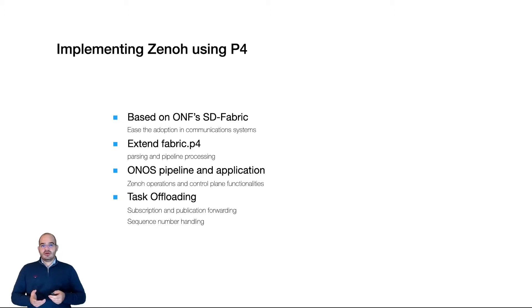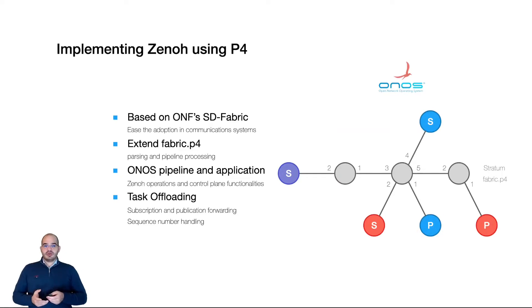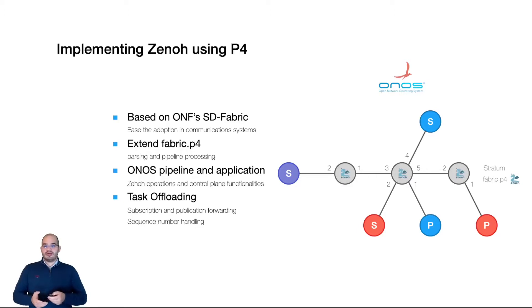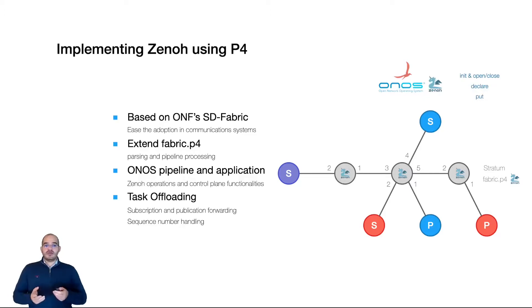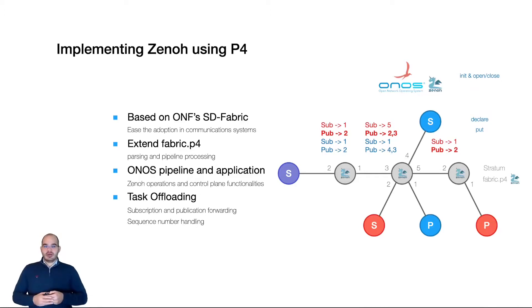Our implementation of Xeno using P4 is based on the ONF-SD Fabric, which means that we use ONOS, Stratum, and Fabric.p4. The goal is to foster the adoption of these new networking protocols on top of the communication systems already developed on top of the ONF-SD Fabric. We extended Fabric.p4 with Xeno parsing and pipeline processing, developed Xeno pipeline and applications for ONOS, and then offloaded some of the pub-sub forwarding and sequence number handling into the data plane.